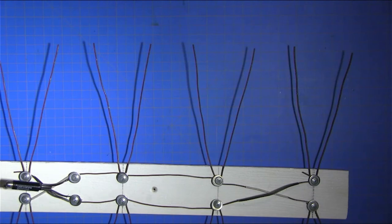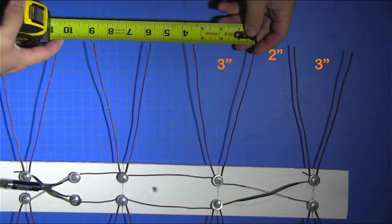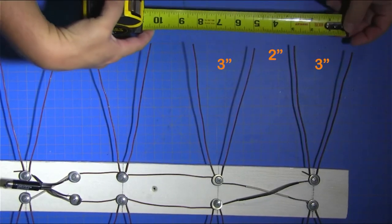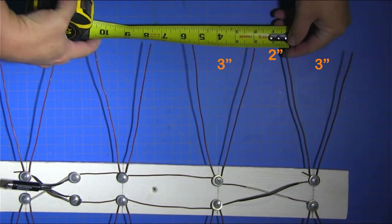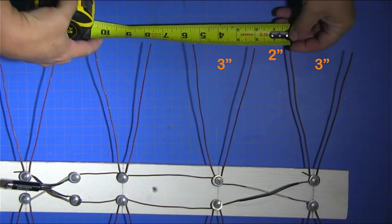Regardless if you get seven inches or not, it's not that big of a deal, but you want them all to be the same. For the distances between, you're going to have three inches, two inches between the ears, then three inches, and then two inches again.